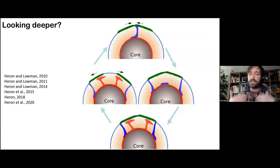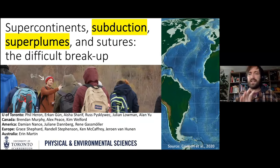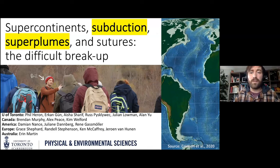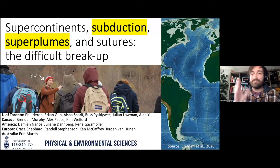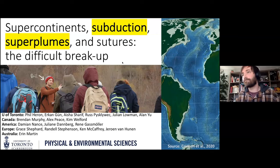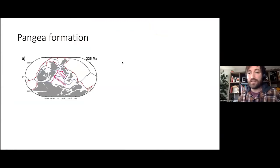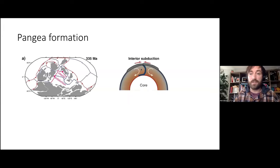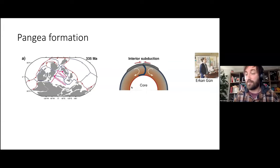That takes us to the second part of the talk: subduction and superplumes. I'm going to reiterate this supercontinent cycle. Pangaea formation, you have interior subduction shown here bringing the continents together. This is a slightly better diagram, drawn by Kang Goon, my postdoc here at the University of Toronto, another excellent geodynamicist and a better artist than me.